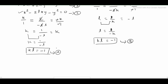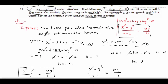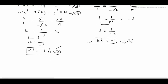Therefore, when the first pair of equations bisects the angle of the second pair, and the second pair bisects the angle of the first pair, we have derived that kl = -1. Hence proved. Thank you.